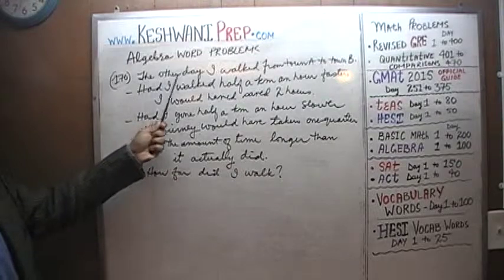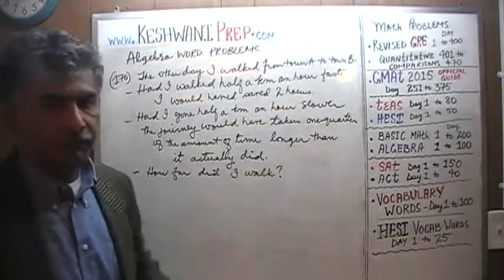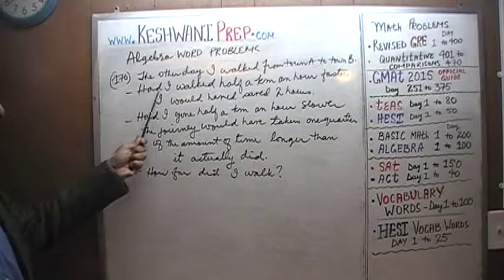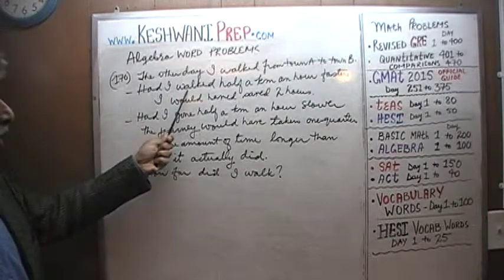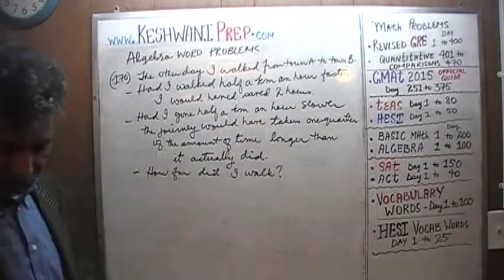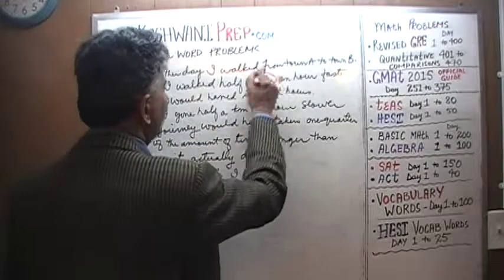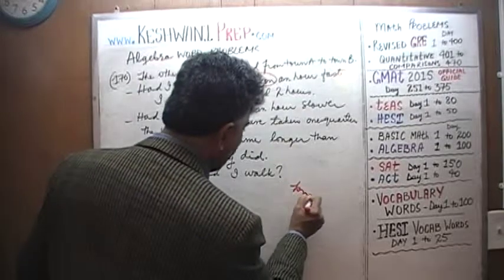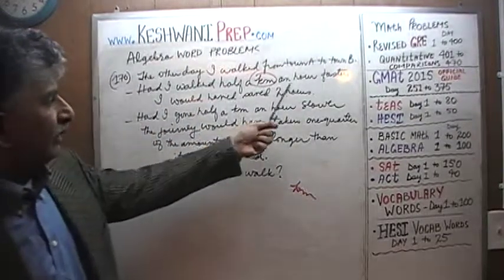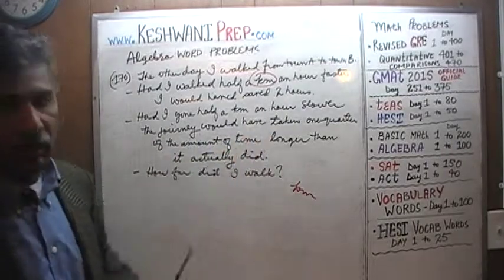It says: the other day I walked from town A to town B — I took a journey from town A to town B. Had I walked half a kilometer an hour faster, I would have saved two hours.